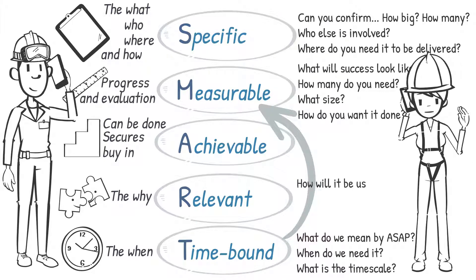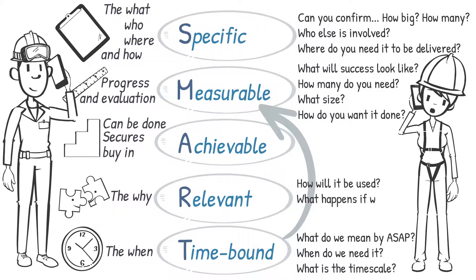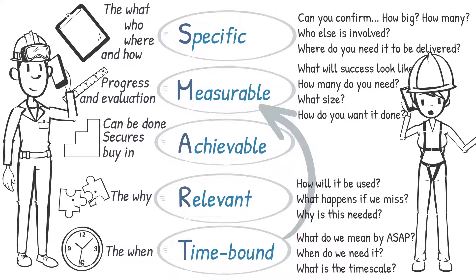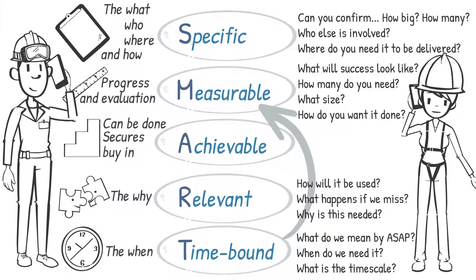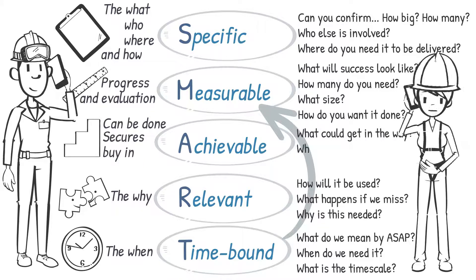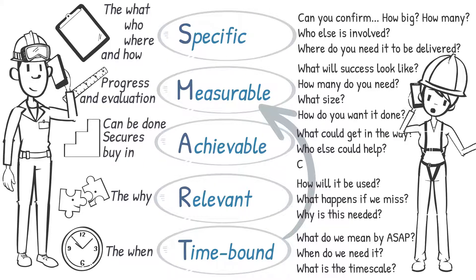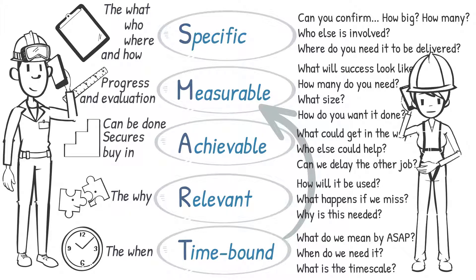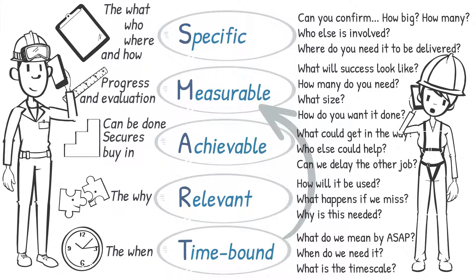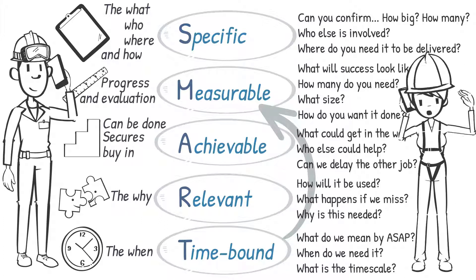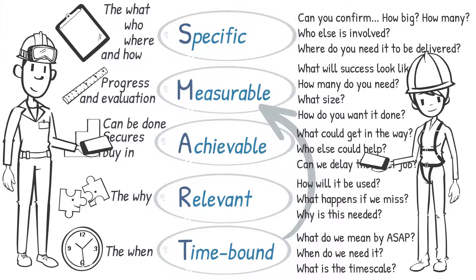What happens if we miss the delivery date? What's the impact on the organisation if we fail? What is the purpose of the task? Is anything likely to get in the way of successfully delivering this work? Given the current workload, what other resources can be made available to enable us to get this done? Can we prioritise specific measures if we can't deliver everything? Is there any other work that can be delayed so that this task can be completed?